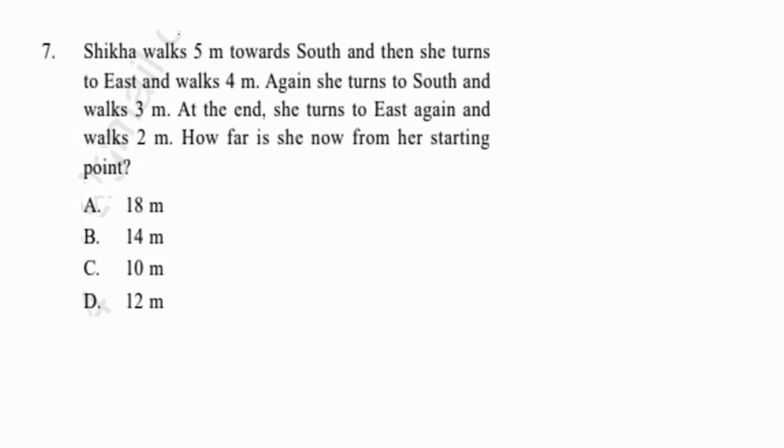A direction sense question. Shikha walks 5 meters south, then turns east and walks 4 meters. Again she turns south and walks 3 meters, then turns east and walks 2 meters. How far is she from the starting point? This creates a right triangle scenario where we need to use the Pythagorean theorem.